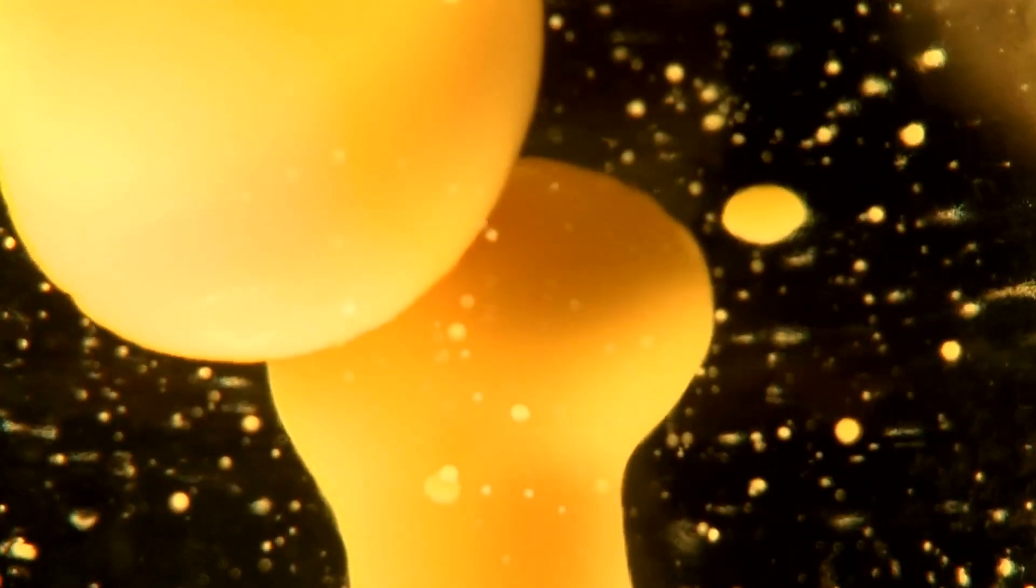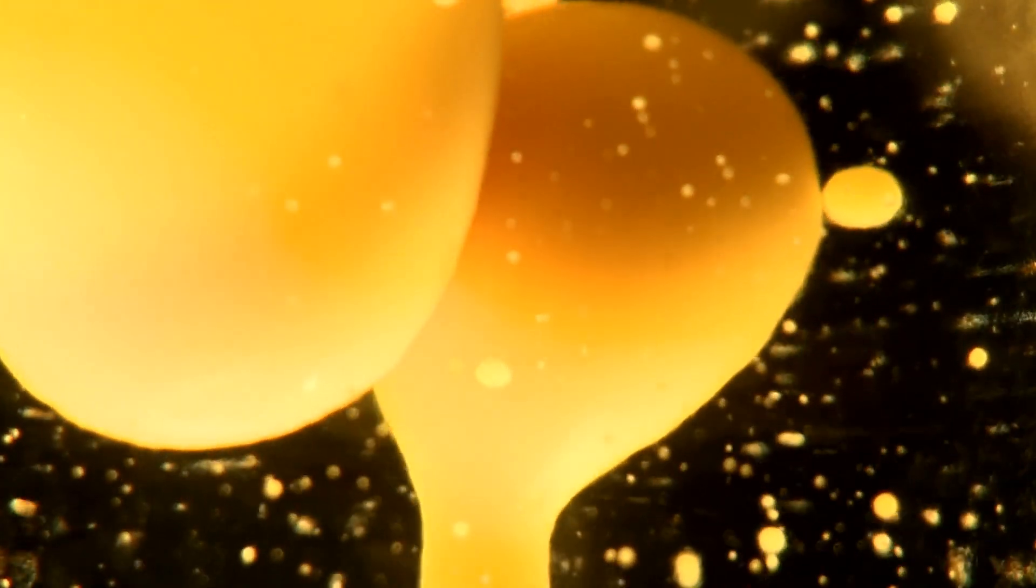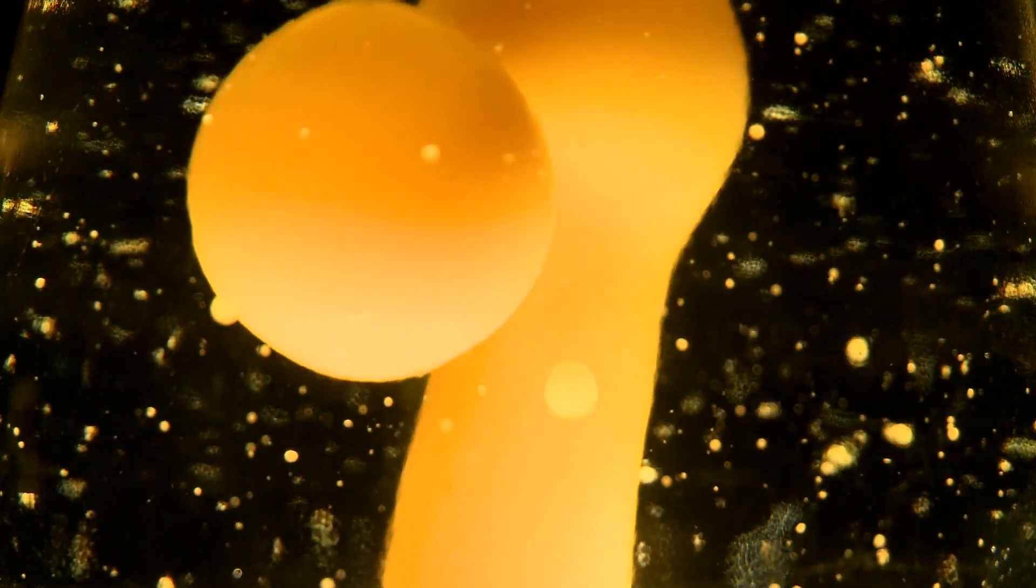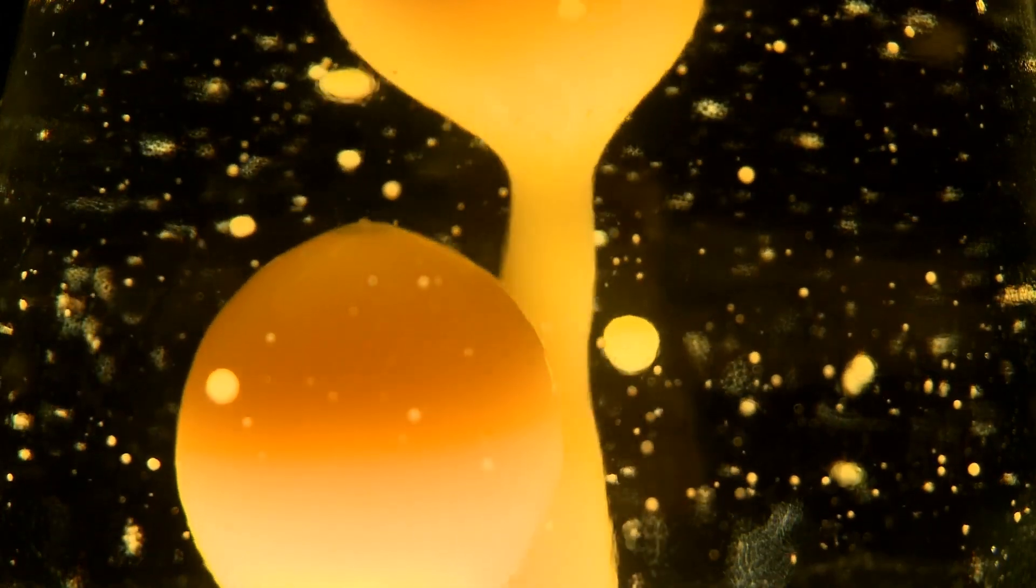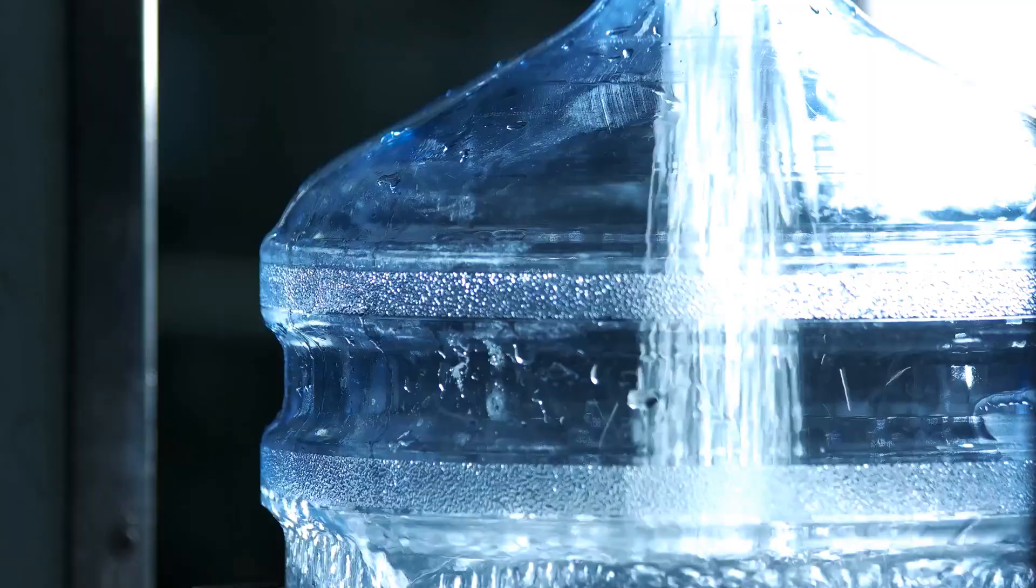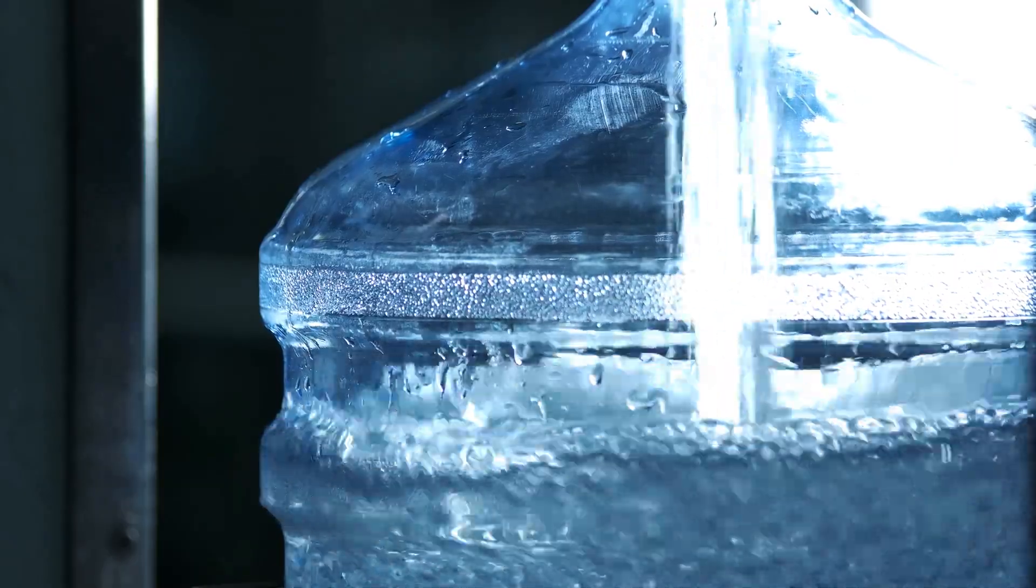Wax: This is our star performer. The wax is what will create the beautiful flowing shapes inside the lamp. It's specially formulated to have just the right density and melting point. This ensures that it will float and sink in the water, creating that mesmerizing effect we all love. Water: the other half of our dancing duo.